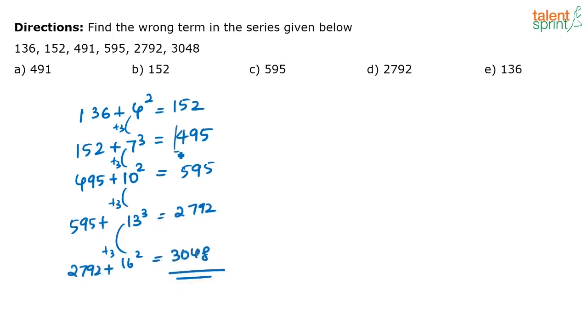So the wrong number here is 495. A lot of you did give me the answer correctly. The correct number has to be 495. The wrong number here is 491. The correct answer is option A, 491.